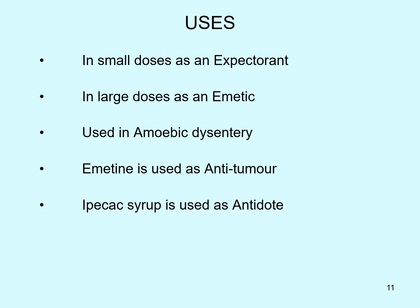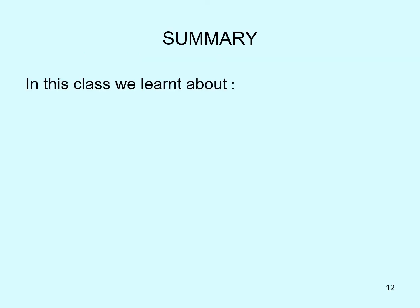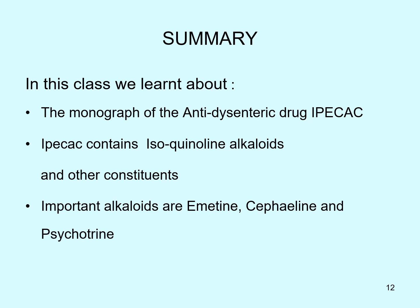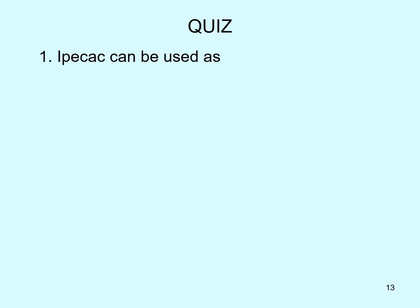In summary, we have seen under this topic the monograph of the anti-dysentric drug Ipecac. Ipecac contains isoquinoline alkaloids and other constituents. The important alkaloids are Emetine, Cephaline, and Psychotrine.